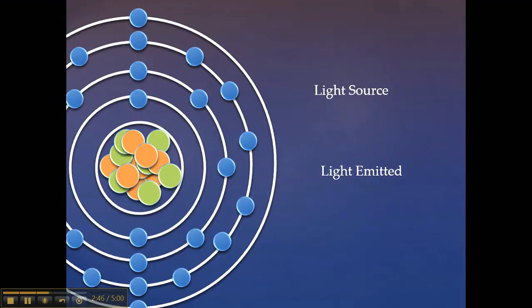Because electrons like to have as little energy as possible, the excited electrons will eventually relax down to their ground state in a process called emission. When the electron drops back down to the lower energy level, it will release the energy it absorbed in the form of light called emission.